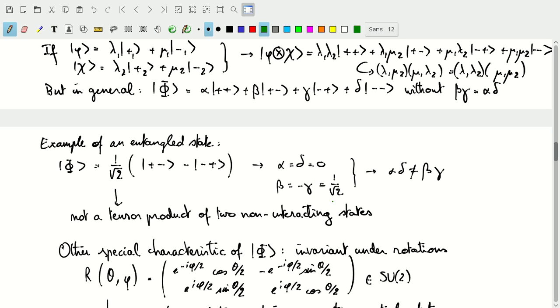β is equal to, γ is 1/√2, so α times δ is definitely not equal to β times γ, so this cannot be a tensor product of two independent states.